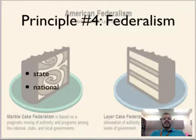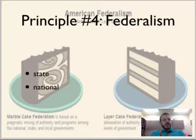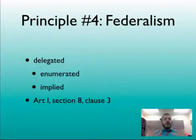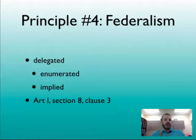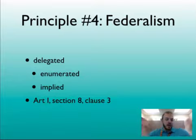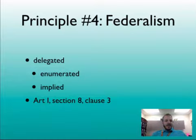Principle number four is the idea of federalism — dividing powers not between different branches, but between different levels like state and national governments. Remember, under the Articles, the states had the power. So all of this is from the perspective of the states, which is why the powers in the Constitution that the federal government gets are called delegated powers — because the states delegated or gave those to the federal government. Those specifically spelled out and listed are called enumerated powers, such as regulating immigration, the power to make treaties, and the power to declare war.